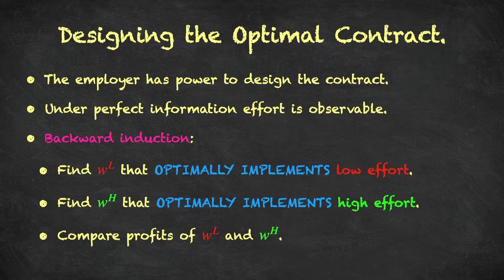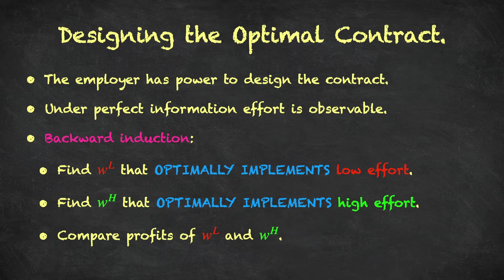So WL is a contract that optimally implements low effort. Similarly, we look for a contract WH that optimally implements high effort. Once we know these two contracts, we calculate the profit associated with each, then go back to the beginning of the decision tree to decide whether to follow a low or high effort approach. Whichever contract gives the highest profit will be the optimal contract for the firm.